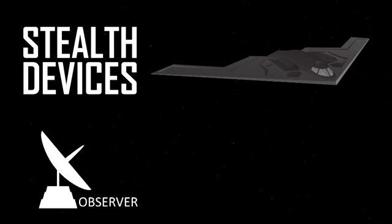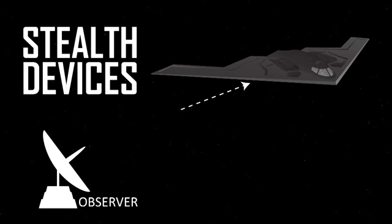Current stealth devices make an object less detectable by absorbing the incoming wave or by redirecting it away from the observer. If no scattered wave is picked up, the object cannot be detected.